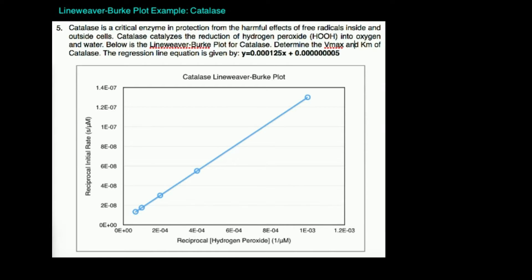Welcome back to Enzyme Kinetics in Biochemistry. My name is Kevin. In this video, we're going to do a Lineweaver-Burk plot example. We're going to use this Lineweaver-Burk plot line and the corresponding y equals mx plus b equation to calculate the Vmax and the Km of the enzyme catalase.